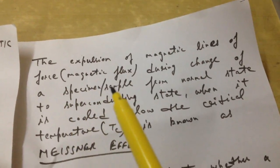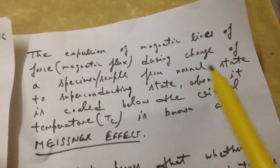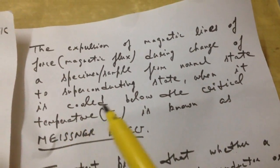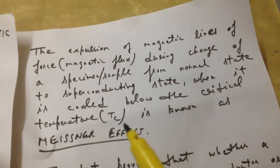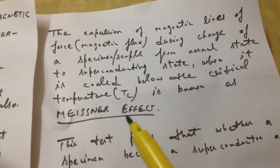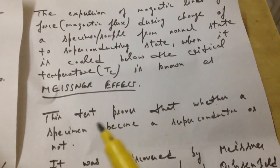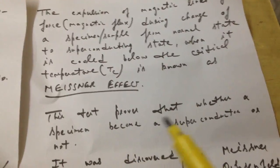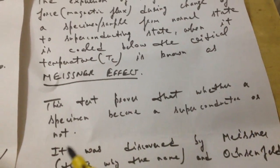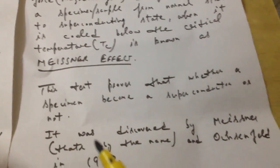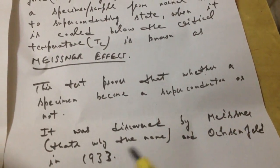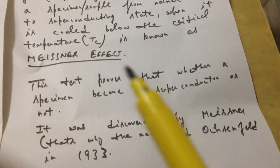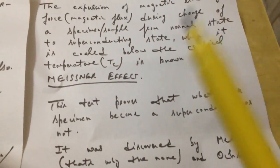When the sample is cooled below the critical temperature, this phenomenon is known as the Meissner effect. This test proves whether a specimen or sample has become a superconductor or not. It was discovered by Meissner and Oxenfeld in 1933.